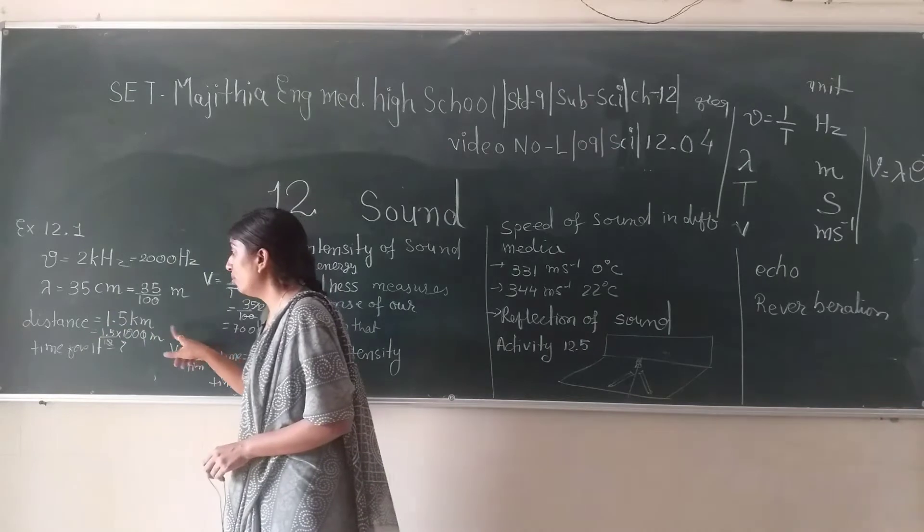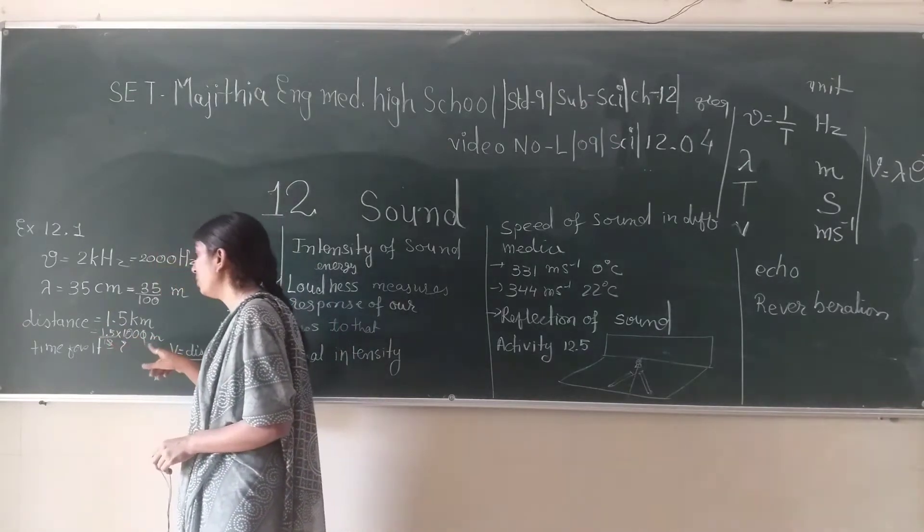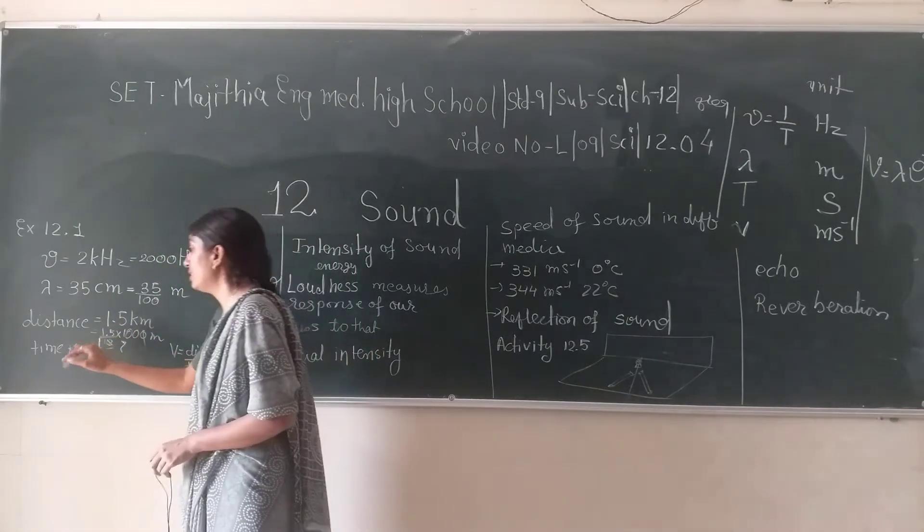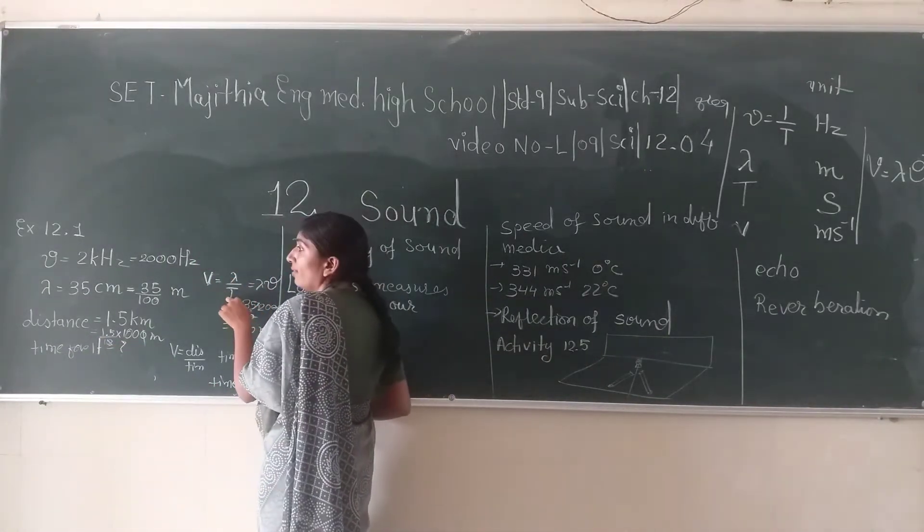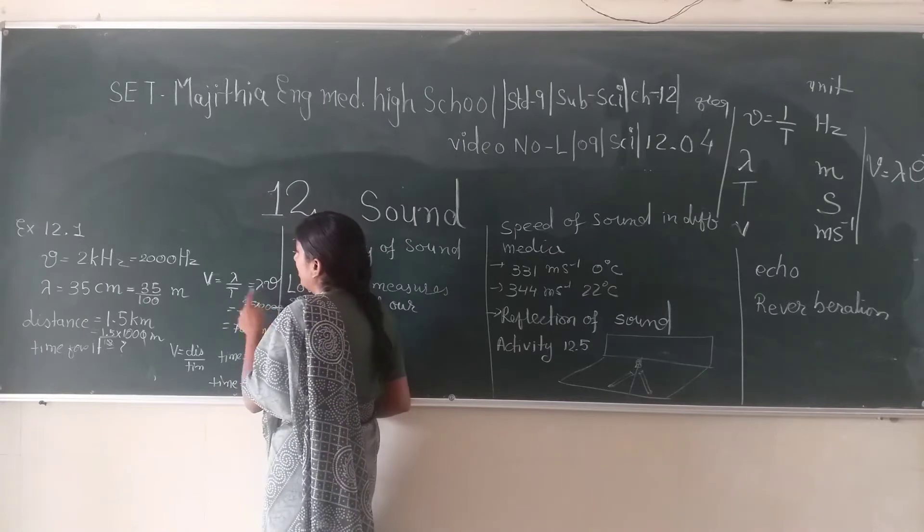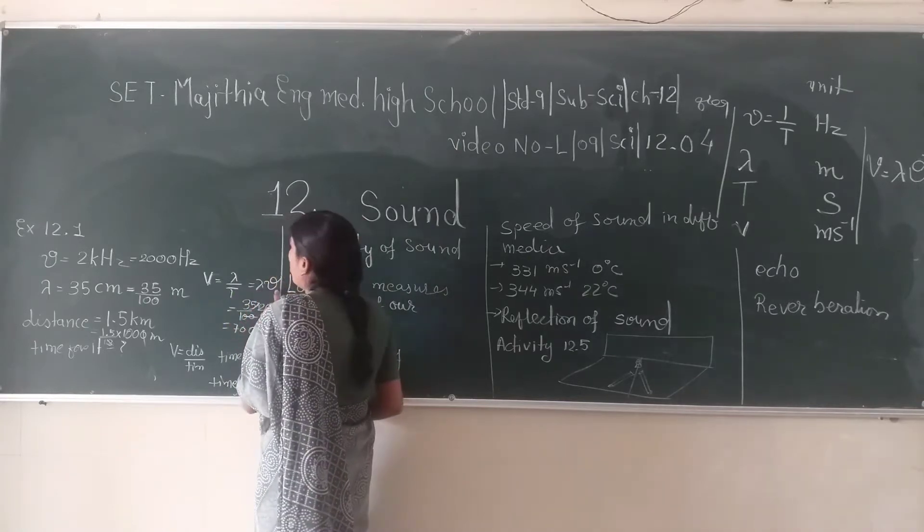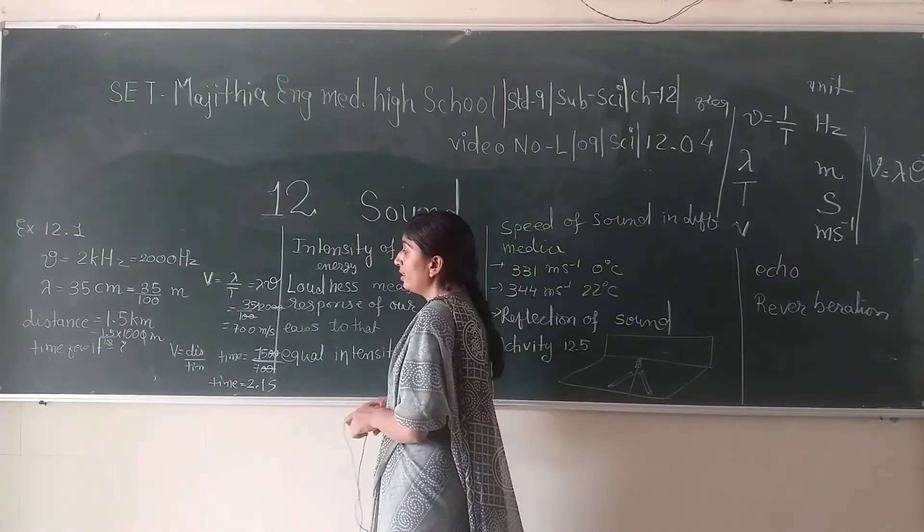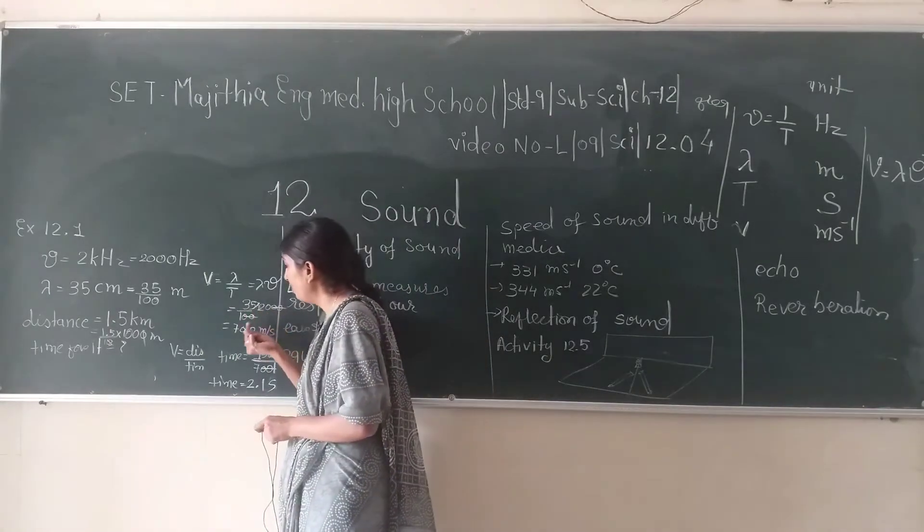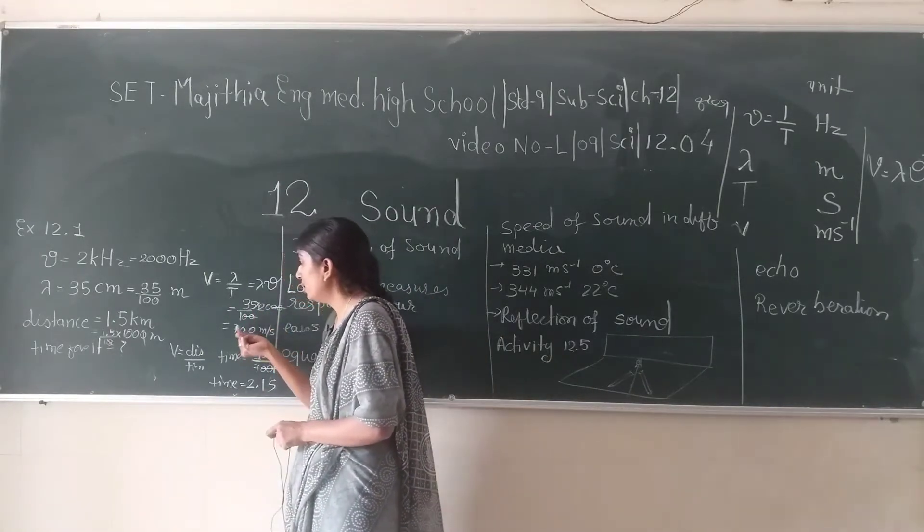1.5 multiplied by 1000 will give us the distance. What is time required for it? Velocity is nothing but lambda divided by time. What is lambda? Lambda is 35 divided by 100. What is frequency nu? Nu is equal to 2000. We will multiply these two: 35 to 70, 32 to 60, so 35 to 70 and one more 0, so 700 meter per second.